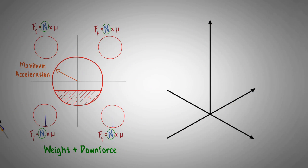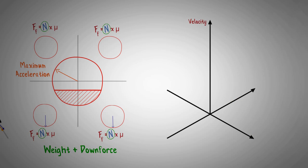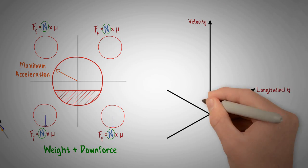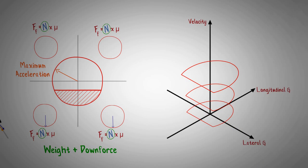Knowing that, we can now extend the GG diagram into a third dimension, that is velocity. If we include now a vertical axis for velocity, we can draw the GG diagram for every speed at different levels, and we will obtain the maximum acceleration the car can sustain in any horizontal direction when traveling at any speed.